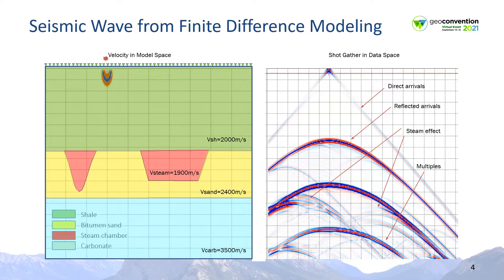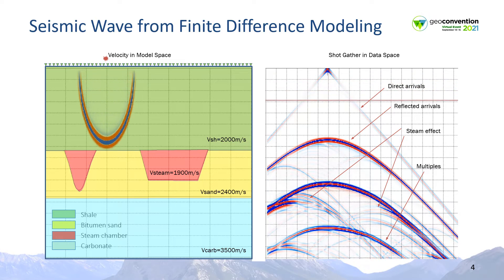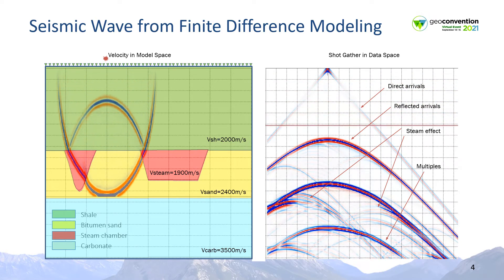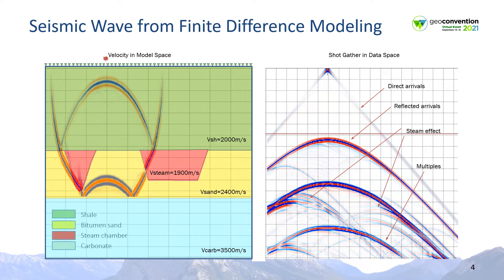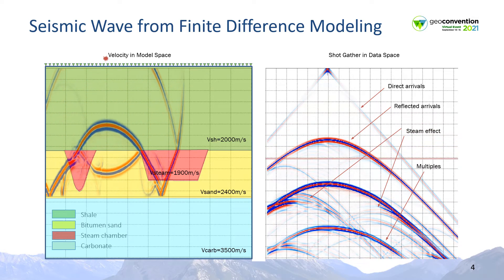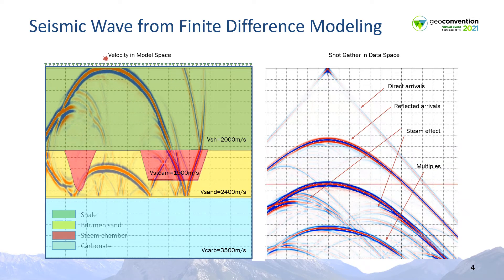This animation illustrates that the entire wave field is used in the model. You can see as the wave field progresses downward, it's impacted by the presence of interfaces, and also there is distortion due to the presence of the steam chambers.